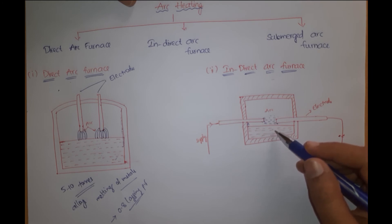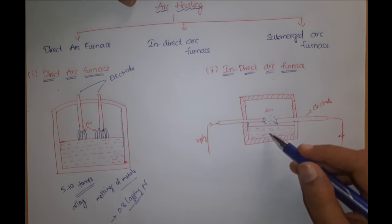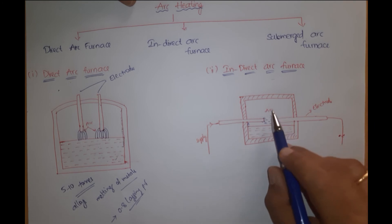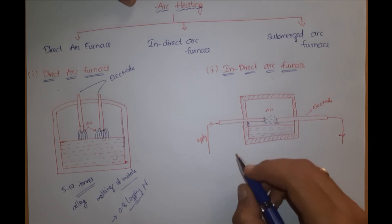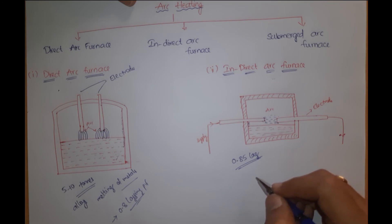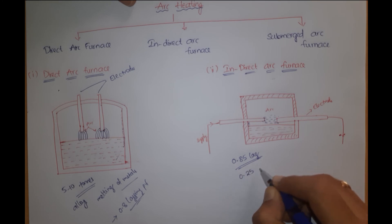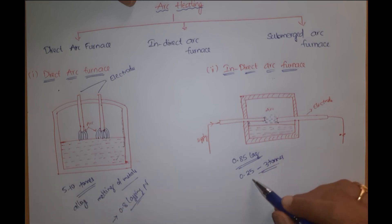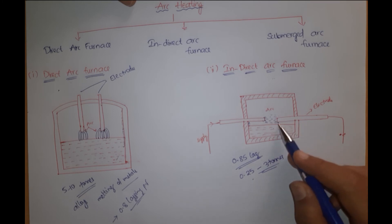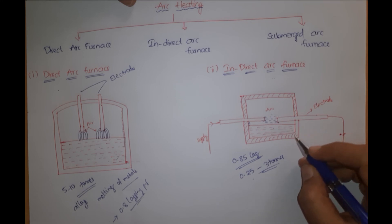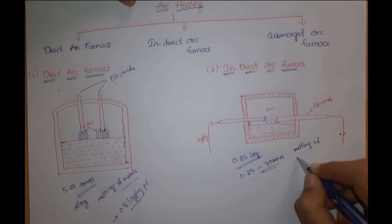Single-phase AC supply is used for this indirect arc furnace. The power input can be regulated by adjusting the length of the arc by moving the electrodes. Coming to the power factor, it operates at nearly 0.85 lagging power factor, and the capacity of the furnace is about 0.25 to 3 tons — lesser than the direct arc furnace because its efficiency is lower due to heat transfer through radiation. These furnaces are mainly applicable for melting of non-ferrous materials.